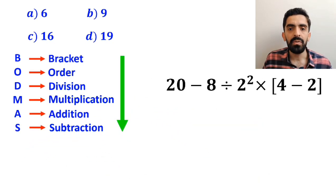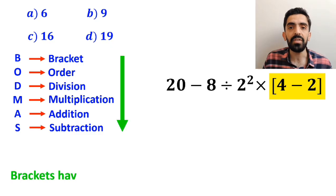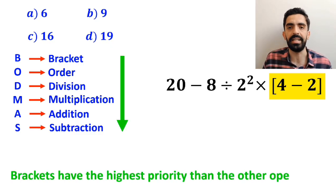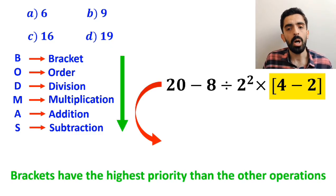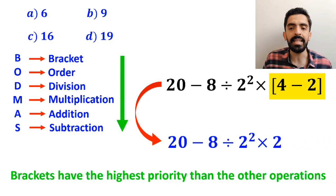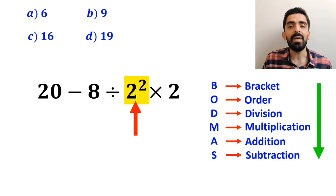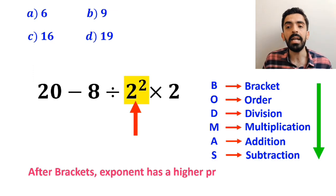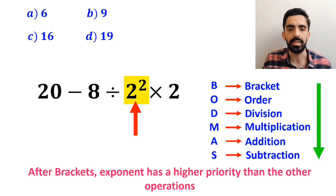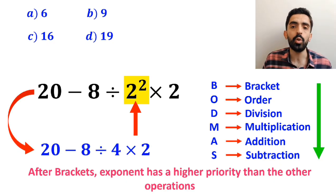According to the BODMAS rule, first we should start with the brackets, because brackets have the highest priority. So we can write this expression as 20 minus 8 divided by 2 squared times 2. In the next step, we go to the exponent, because after brackets, exponents have higher priority than the other operations. So this expression simplifies to 20 minus 8 divided by 4 times 2.